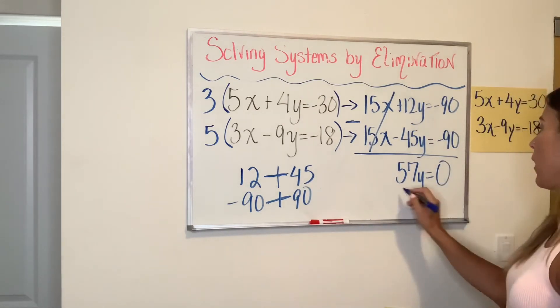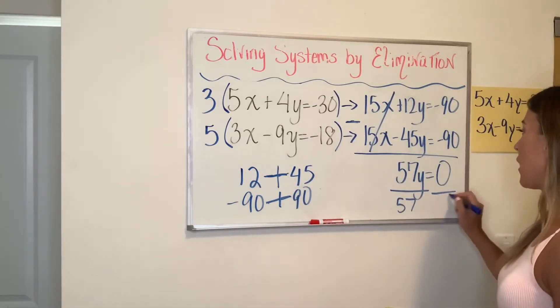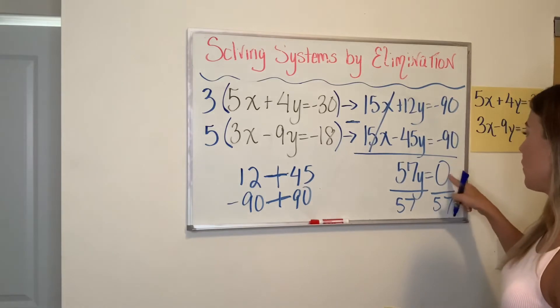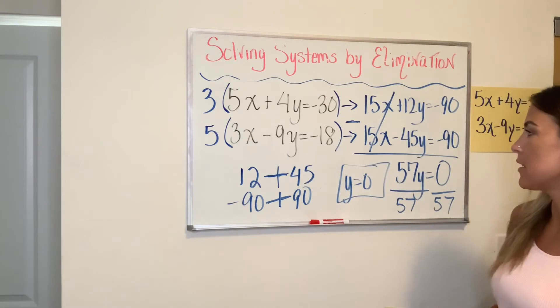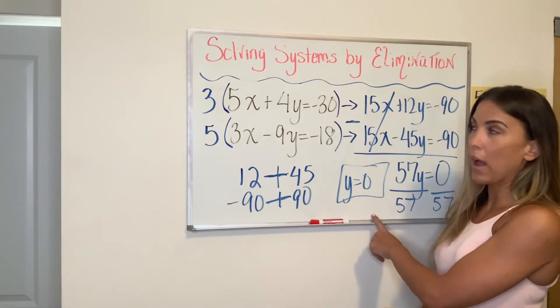So now I have a one step equation. I'm going to divide by 57 on both sides and I have zero divided by 57. So my Y coordinate for this solution of this system is zero. So my Y is zero.